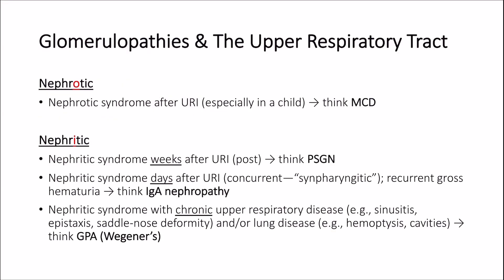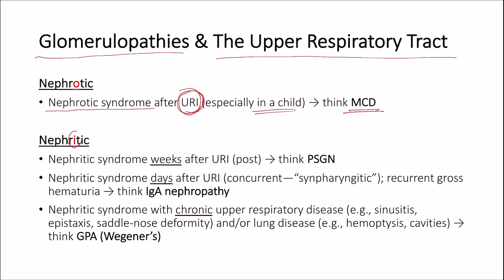Now we'll talk about the relationship between diseases of the glomeruli and the upper respiratory tract. You have to know this slide by heart as it will help you solve a lot of cases on exams. The first scenario is when a patient develops nephrotic syndrome after an upper respiratory tract infection, especially in a child — in this case, think minimal change disease. The other scenarios are about nephritic syndrome. When a patient develops nephritic syndrome weeks following an upper respiratory tract infection, the most likely diagnosis is post-streptococcal glomerulonephritis. Nephritic syndrome that develops days following an upper respiratory tract infection — in this case, think IgA nephropathy. It is synpharyngitic, meaning the pharyngitis is closely related to the nephritic syndrome, especially if the case mentions recurrent gross hematuria following an upper respiratory tract infection.